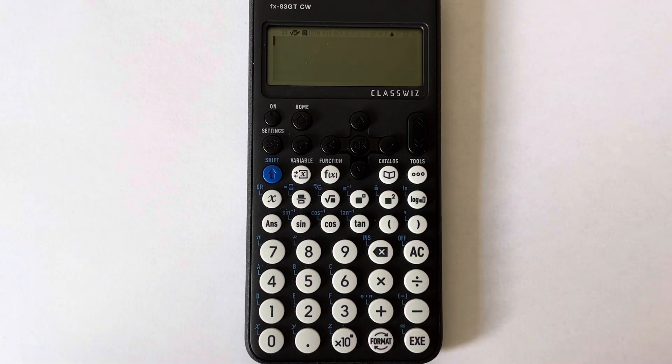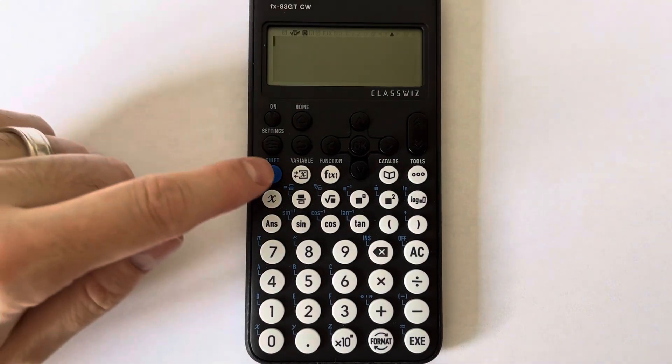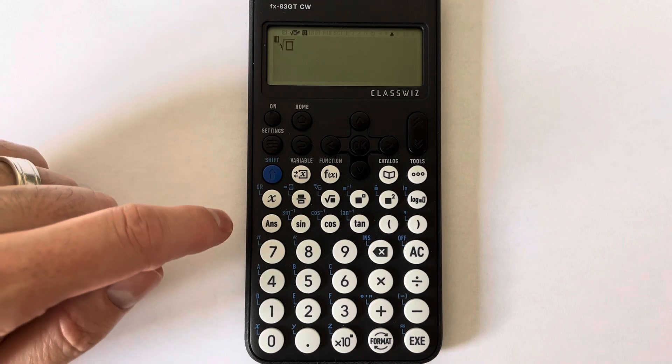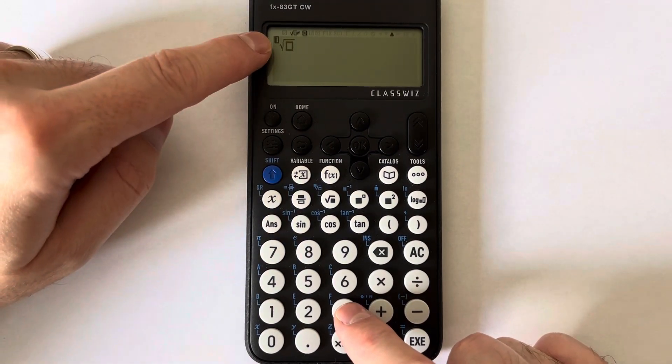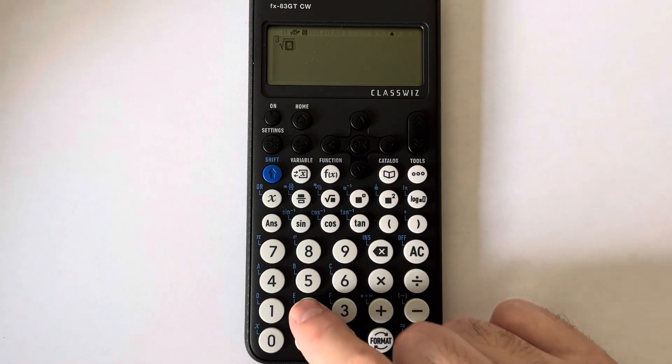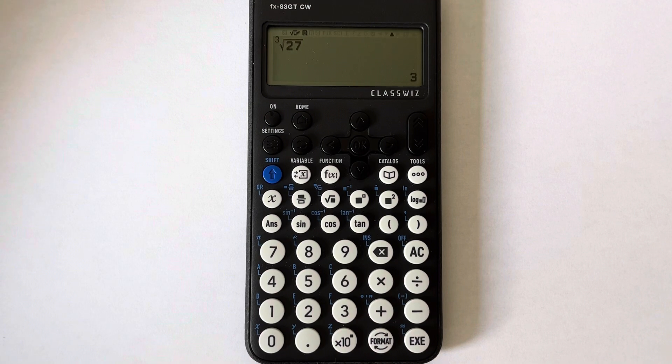Press shift, then the square root key. You'll have to type a little three in this box here, move it to the right, and then type in 27. Press the equals and we get the answer of three.